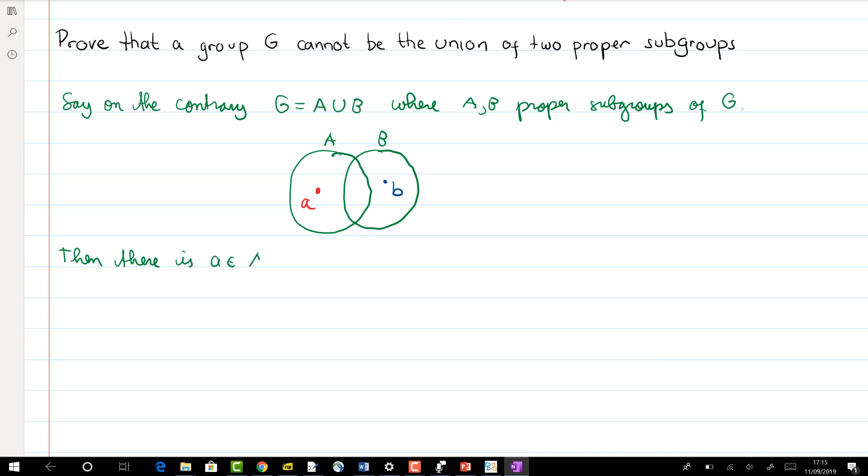A is not the whole of G, meaning we can find another element outside of A. Similarly, you can find an element outside of B. So let's call a an element in A but not in B, and b an element in B but not in A. So we can ask the question: what's going on with a times b?